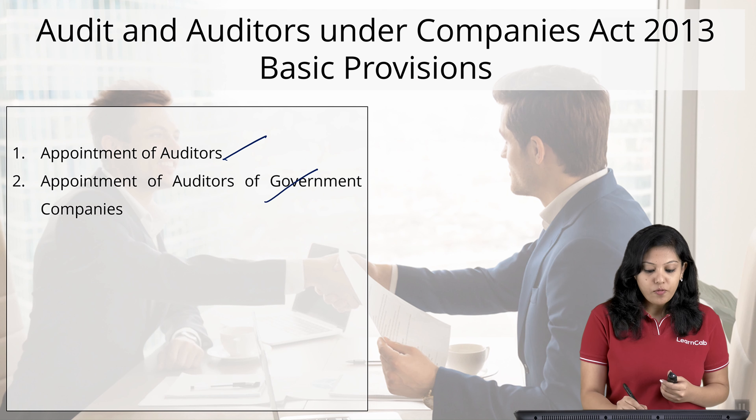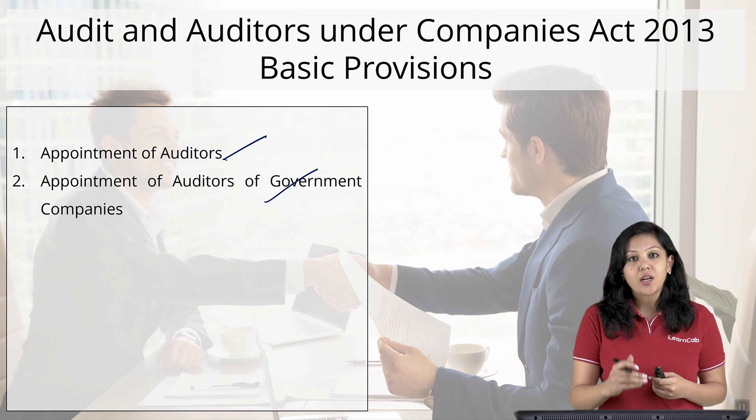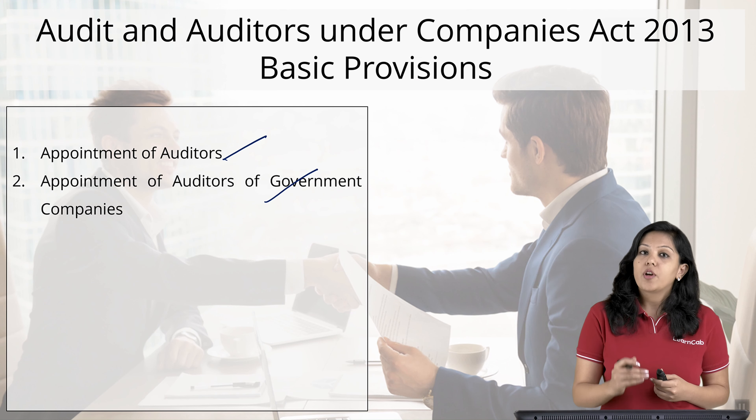The contents of this chapter are: first, appointment of first auditors; second, appointment of auditors for government companies, as the provisions differ for other companies versus government companies. Next, mandatory rotation of auditors — what it means and the provisions under Companies Act 2013. Then, eligibility and qualifications of auditors, disqualifications of auditors, remuneration of auditors, powers and duties of auditors, and lastly the audit report.